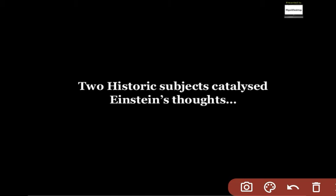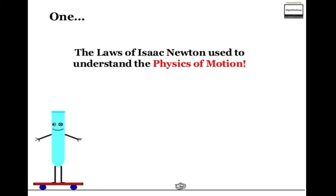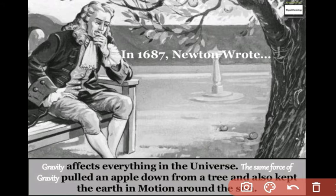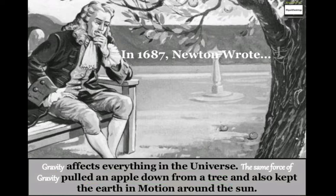Two historical subjects came into Einstein's thoughts. First, the laws of Isaac Newton used to understand the physics of motion. In 1687, Newton wrote that gravity affects everything in the universe. The same force gravity pulls an apple down from a tree and also keeps the earth in motion around the sun.